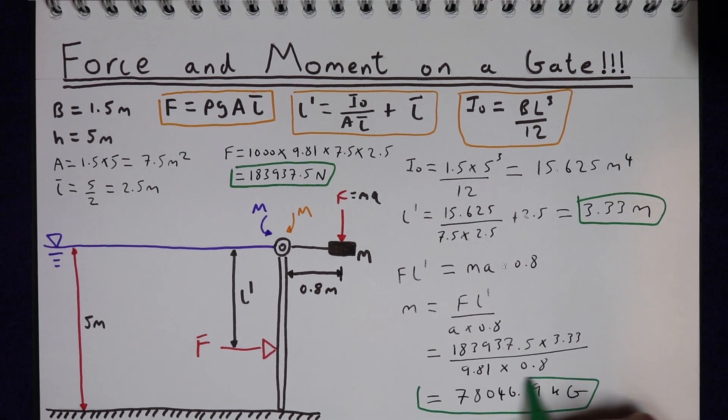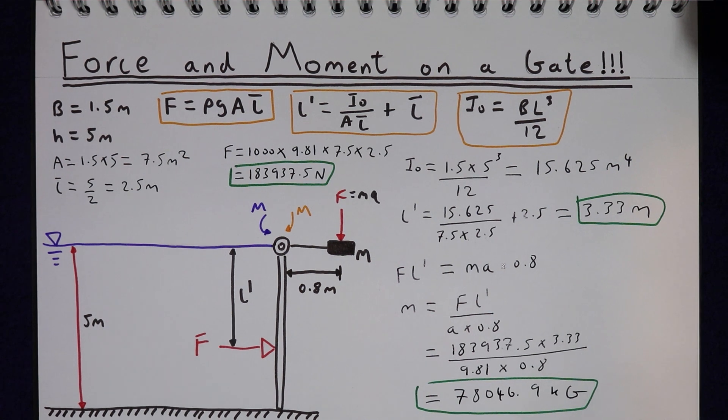And that is the mass required to keep our gate shut when the water level is 5 metres.